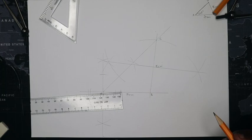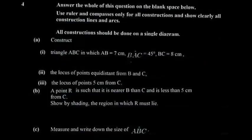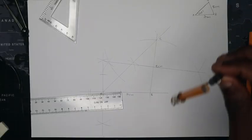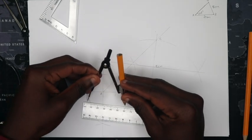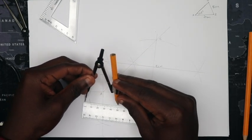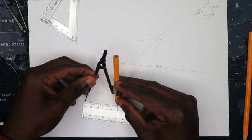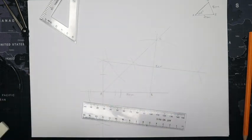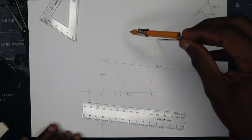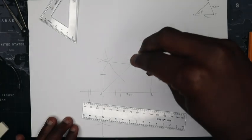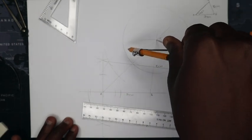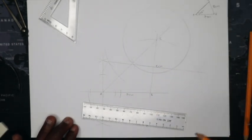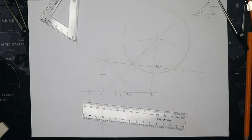Next, construct the locus of points 5 centimeters from C. The locus of points a certain distance from a point is a circle with that radius. So set your compass to 5 centimeters, place it on C, and draw a full circle. This circle represents all points exactly 5 centimeters from C.